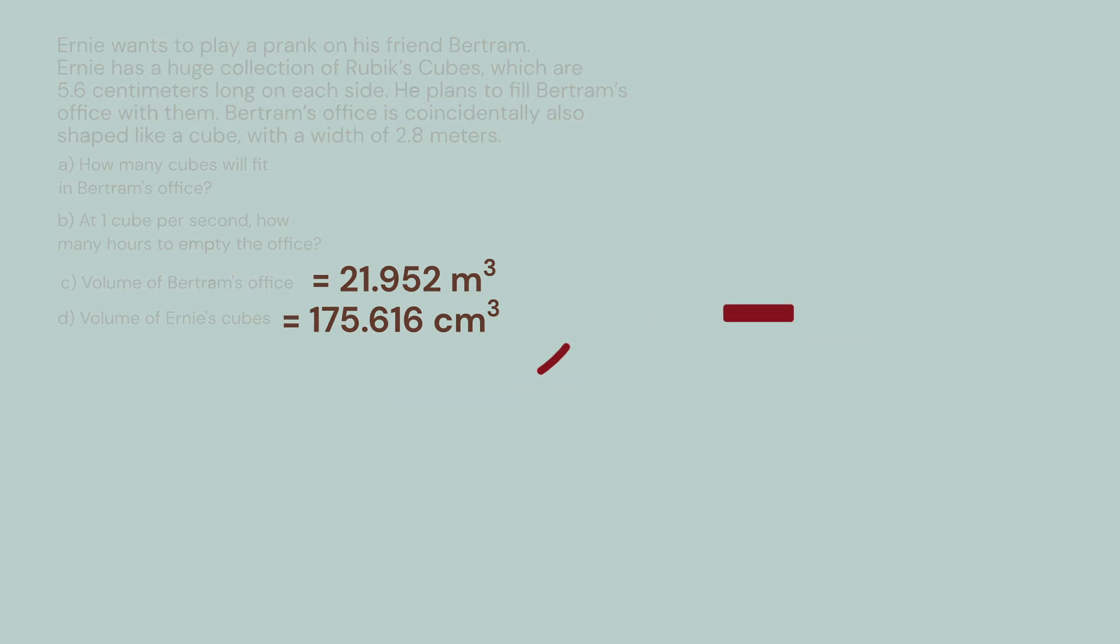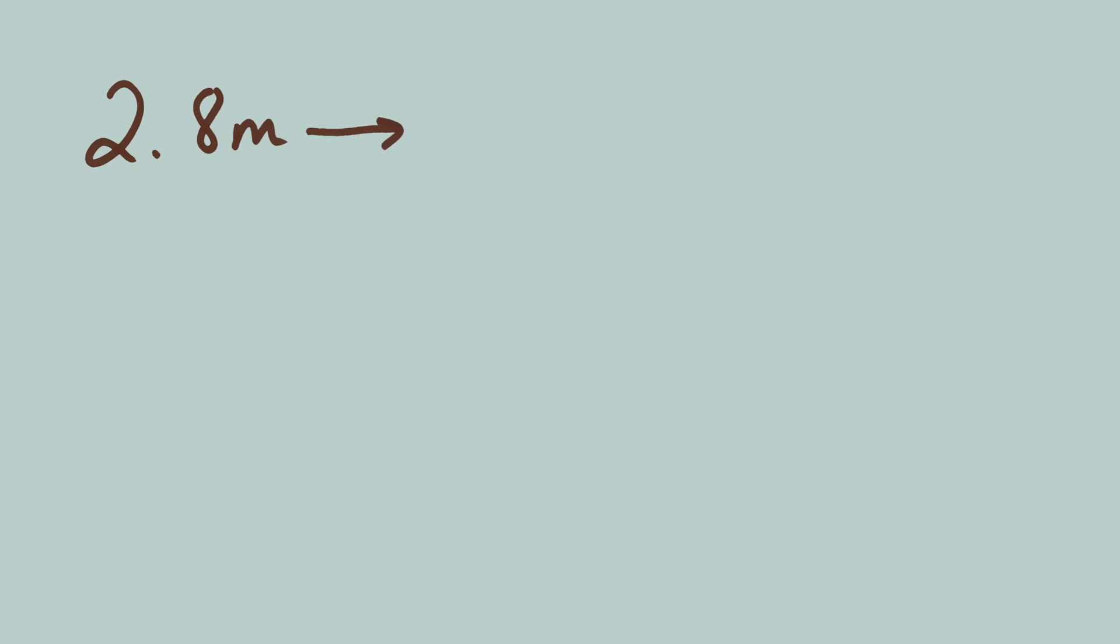First, let's convert that one length of Bertram's office from meters into centimeters. 2.8 meters is how many centimeters? There are 100 centimeters in a meter, so we can use that as a conversion factor like this.